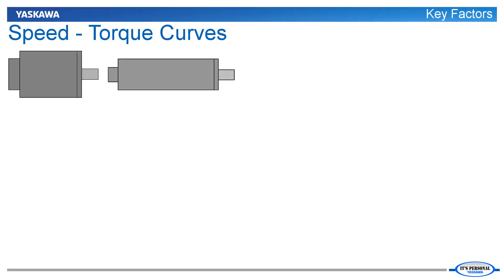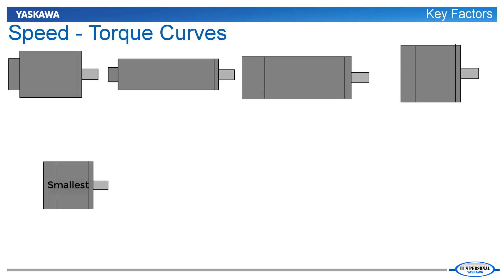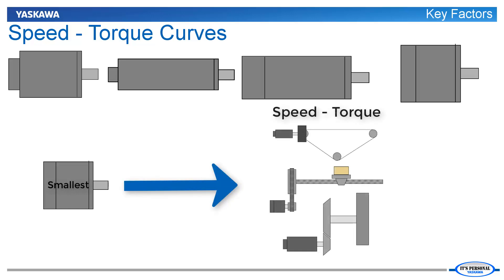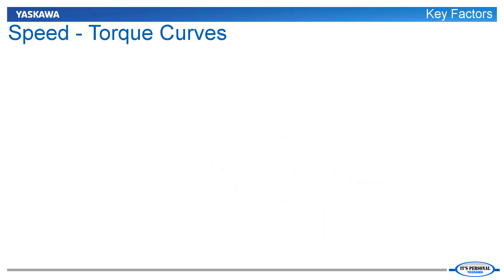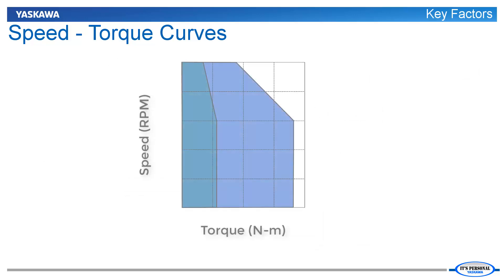Several motors that provide a suitable inertia ratio may be available. So, the task remains to find the smallest motor that still has the ability to produce the speed and torque required for the application. A motor's speed and torque capability is described in the catalog using an individual speed-torque curve for each motor.